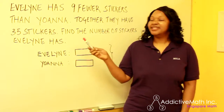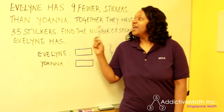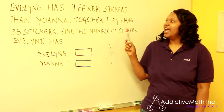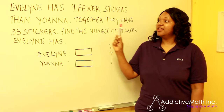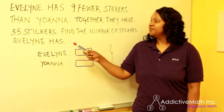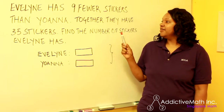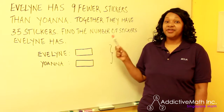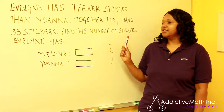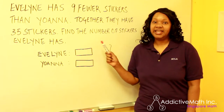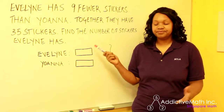Let's read it together. Evelyn has nine fewer stickers than Johanna. Together they have 35 stickers. Find the number of stickers Evelyn has.